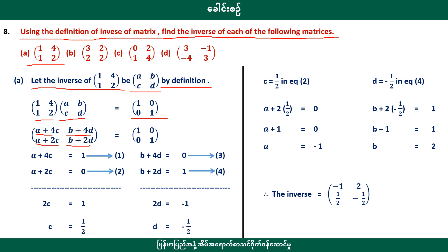So A plus 4C equals 1, and A plus 2C equals 0. For the other column: B plus 4D equals 0, and B plus 2D equals 1. These are our four equations to solve for A, B, C, D.